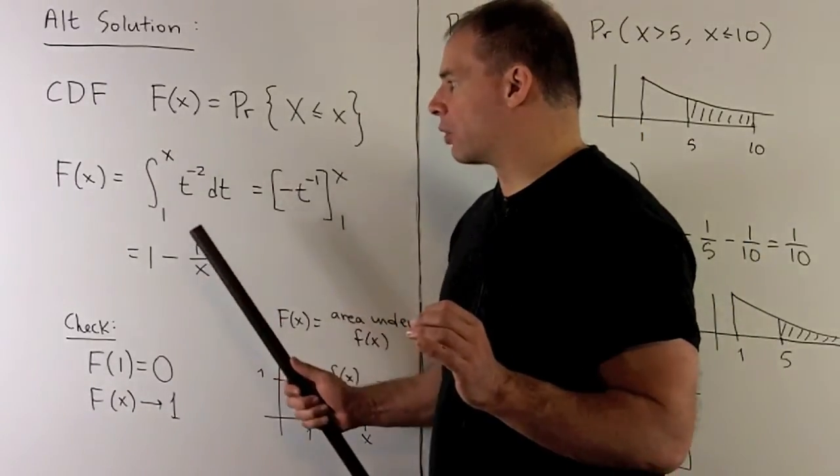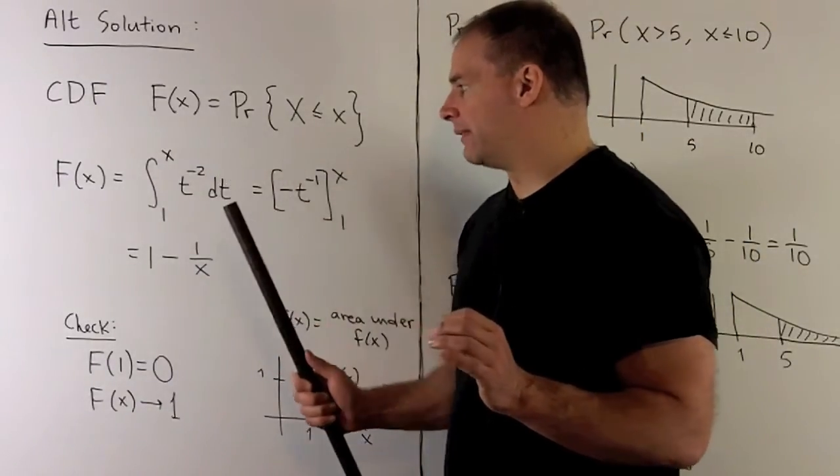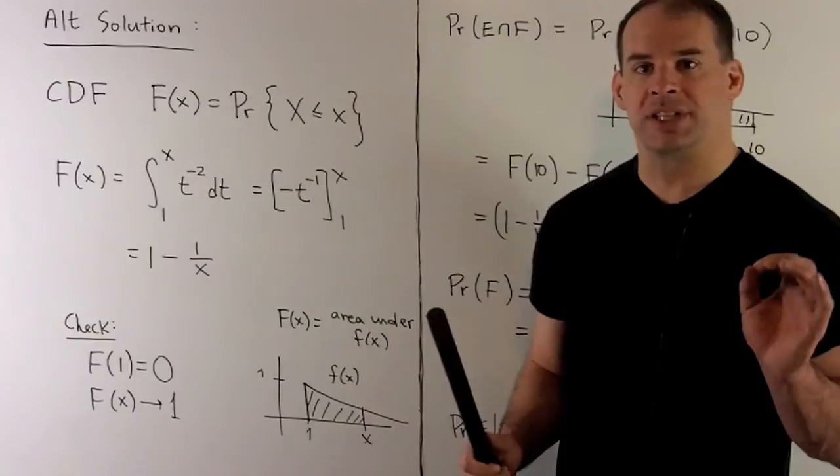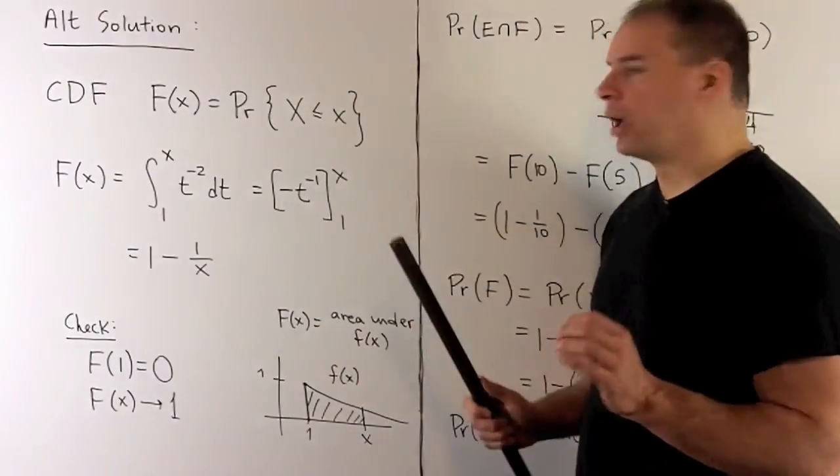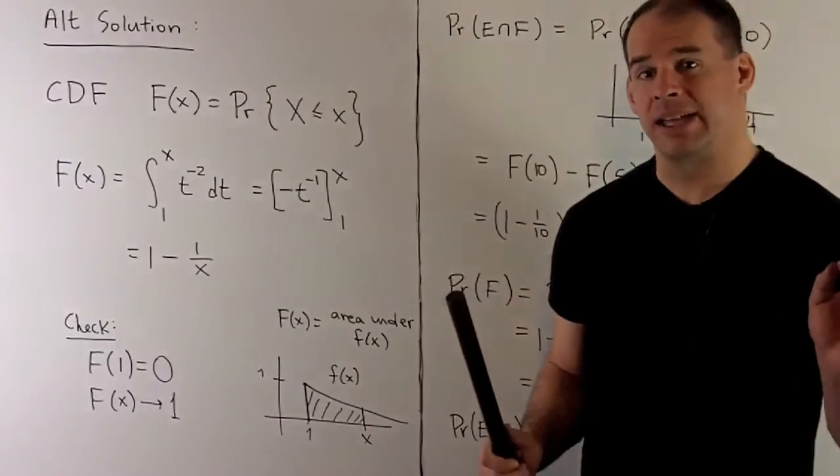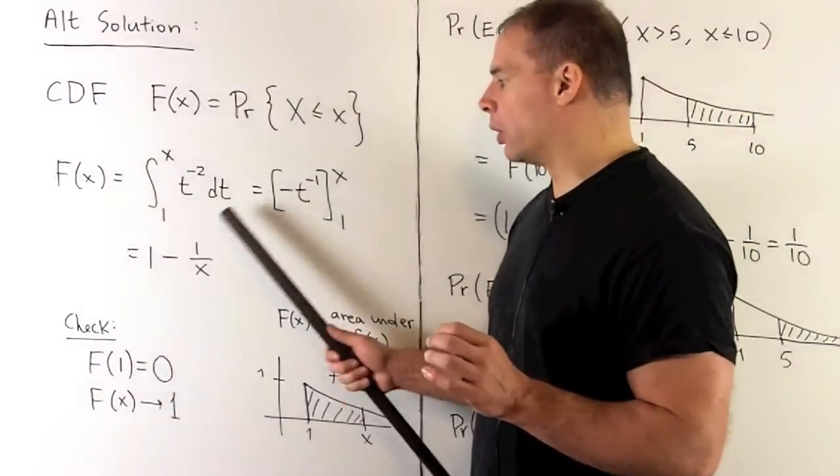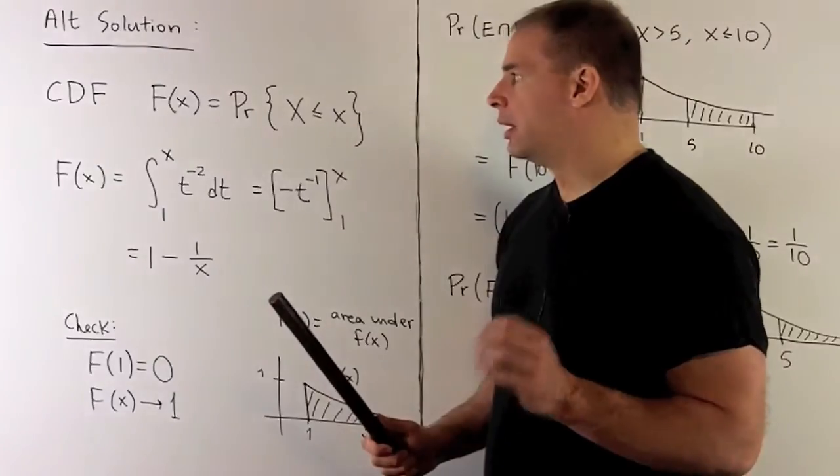Now, this is just gonna be the definite integral from 1 to x of our density function. So here, I'll use a t instead of an x. So that's gonna go to minus t to the minus 1. We evaluate at 1 and x and take the difference. So that gives me 1 minus 1 over x.